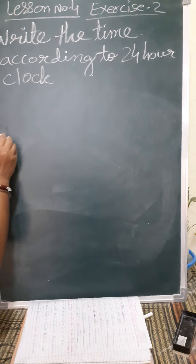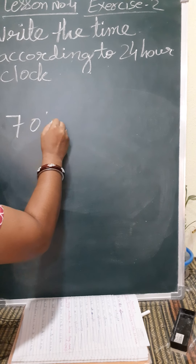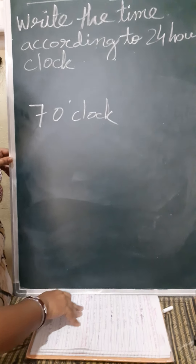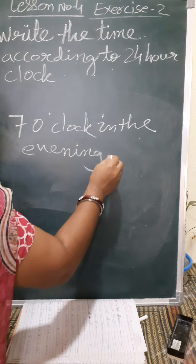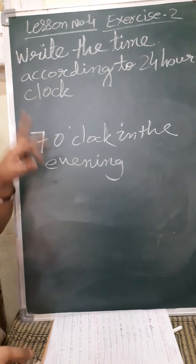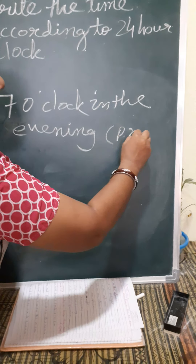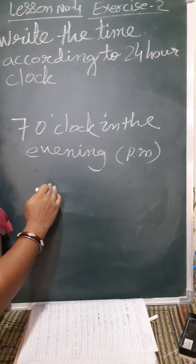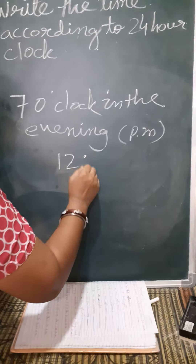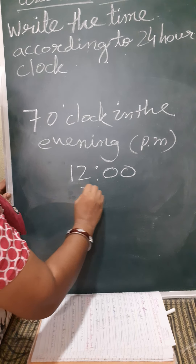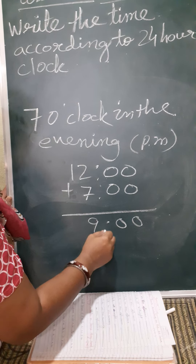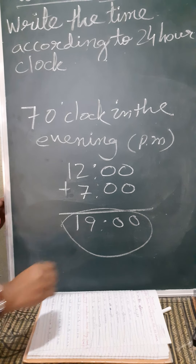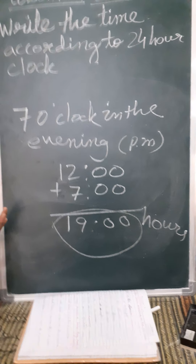And next, another question: 7 o'clock in the evening. Evening means it is PM time — after 12 o'clock. So again the same rule: we will add 12 with 7. 0, 7 plus 12 equals 19. So this is read as 19 hours in 24-hour clock.